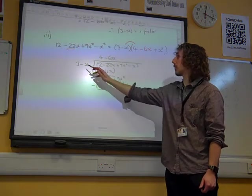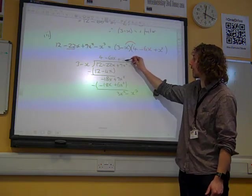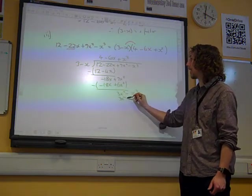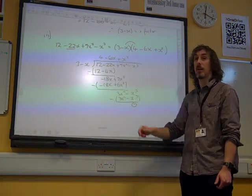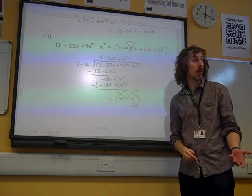Minus x cubed, what do we times 3 by to get 3x squared? The answer's plus x squared. 3x squared minus x cubed gives us our remainder of zero as required. And there we've got the thing to the only bracket. That was quite neat, wasn't it?